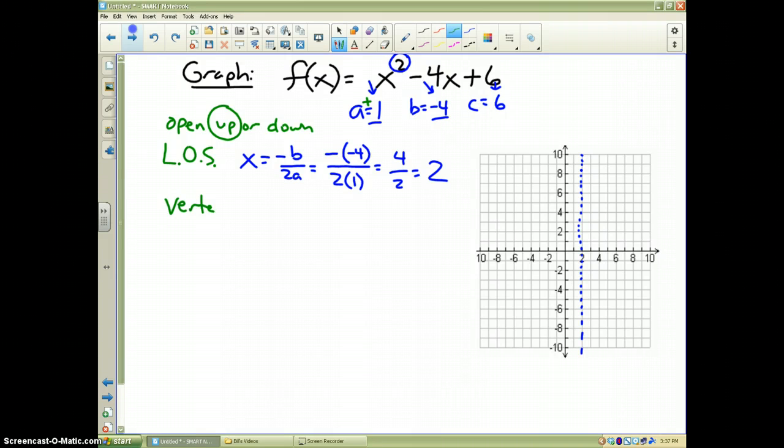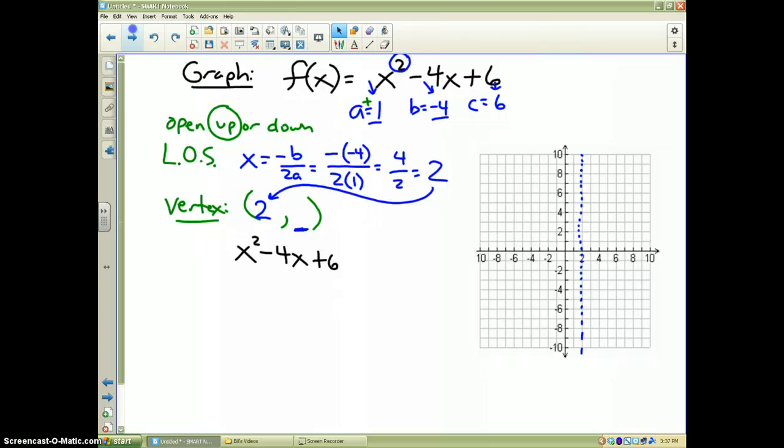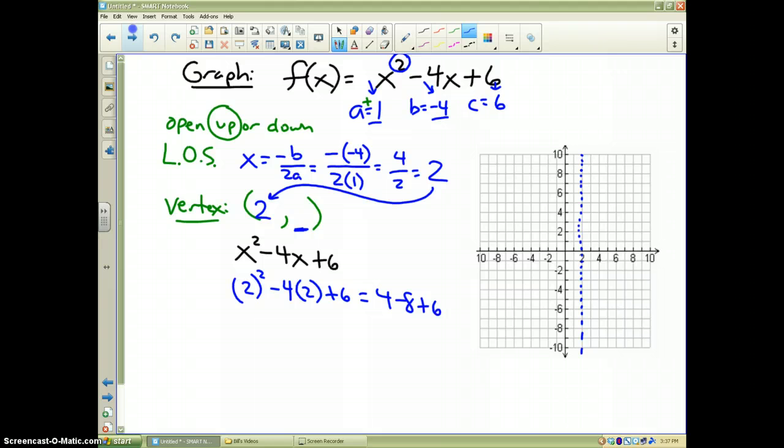The vertex. Well, I need a coordinate of the vertex. Whatever we got for the line of symmetry is the x coordinate of the vertex. Now I've got to figure out the y value. How do I do that? I take my equation, x squared minus 4x plus 6, and I'm going to put 2 in for x. So I get 2 squared minus 4 times 2 plus 6. And that equals 4 minus 8 plus 6. And what does that equal? Negative 4 plus 6. That looks like positive 2 as well. So therefore, my vertex is the point 2, 2, which should lie on my dotted line. Beautiful.